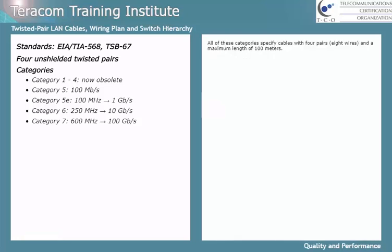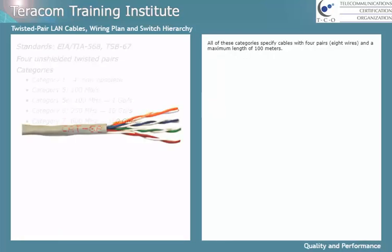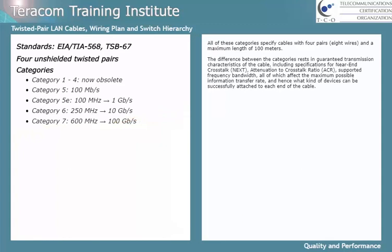All of these categories specify cables with 4 pairs, or 8 wires, and a maximum length of 100 meters. The difference between categories rests in guaranteed transmission characteristics of the cable, including specifications for near-end crosstalk, attenuation-to-crosstalk ratio, the supported frequency bandwidth, and other characteristics — all of which affect the maximum length of the cable and the maximum possible information transfer rate, and hence what kind of devices can be successfully attached to each end.